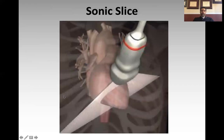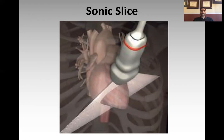If you were to conceptualize what that sound wave looks like coming out of the ultrasound probe, it's going to be very thin — a slice coming out, slicing through the tissue like that. I think it's important to conceptualize this, because it'll give you an idea of what the image will do based on various repositioning maneuvers that you make with the probe.